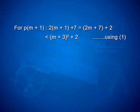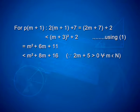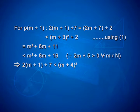For p of m plus 1, we can write 2 into m plus 1 plus 7, that can be simplified as 2m plus 7 plus 2, which is less than m plus 3 whole square plus 2. Using the first equation and expanding, we get m squared plus 6m plus 11, which is obviously less than m squared plus 8m plus 16. Note this step — it is very important — because 2m plus 5 is greater than 0 for every m belonging to N. We could put the inequality sign with the help of this expression. Therefore, 2 into m plus 1 plus 7 is less than m plus 4 whole square. This implies p of m plus 1 is true.